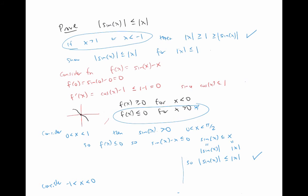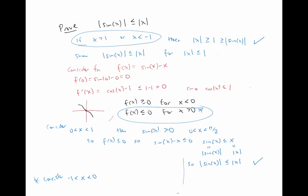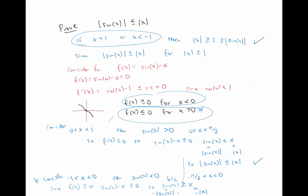So now we just have to consider the possibility that x is negative, but no more negative than negative one. So in this case, we know that sine of x is going to be negative, because x is between negative pi over two and zero. Okay, so since f of x is bigger than zero in this case, we have sine x minus x is bigger than or equal to zero, so sine of x is bigger than or equal to x. But in this case, since x is negative, x is the same thing as negative the absolute value of x. And since sine x is negative, that's the same thing as negative the absolute value of sine x. And so we have that negative absolute value of sine x is greater than or equal to negative absolute value of x. And if I multiply both sides of that equation by negative one, that reverses the inequality sign, so that we have exactly the inequality I want.